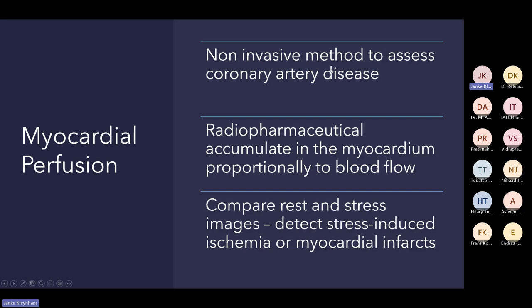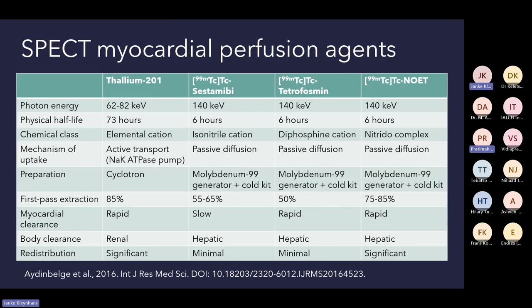Myocardial perfusion is a non-invasive method to assess coronary artery disease. Radiopharmaceuticals should accumulate in the myocardium proportionally to blood flow, and this is one of the major evaluations for an ideal myocardial perfusion agent. Ideally it should give an accurate statement of blood flow in the arteries. We use it clinically to compare rest and stress images. I'll focus on how these radiopharmaceuticals accumulate and how they are labeled. I have here four SPECT myocardial perfusion agents.